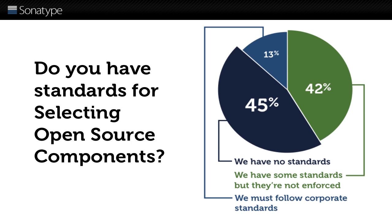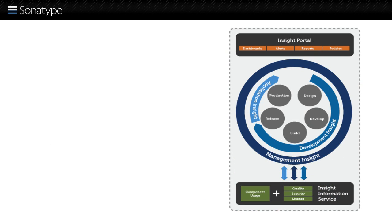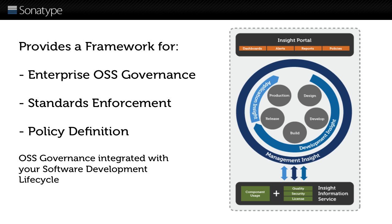While the risks are very real, most organizations lack a strategy for selecting open-source artifacts and for keeping track of which artifacts are present in deployed applications. Sonatype Insight provides a framework to support open-source governance and decisions that relate to open-source adoption and risk mitigation.